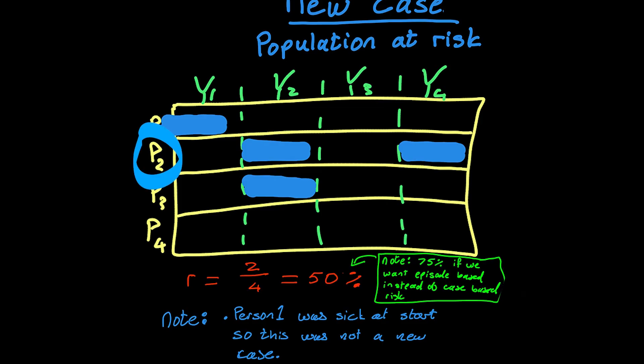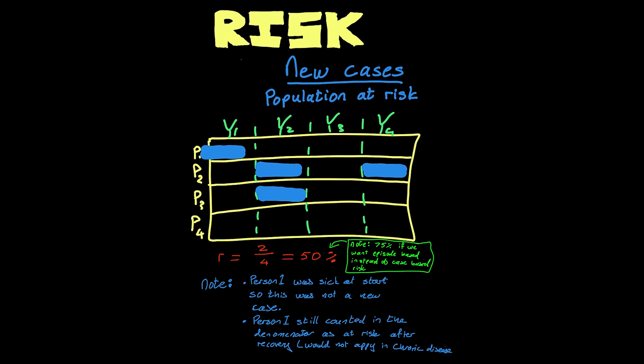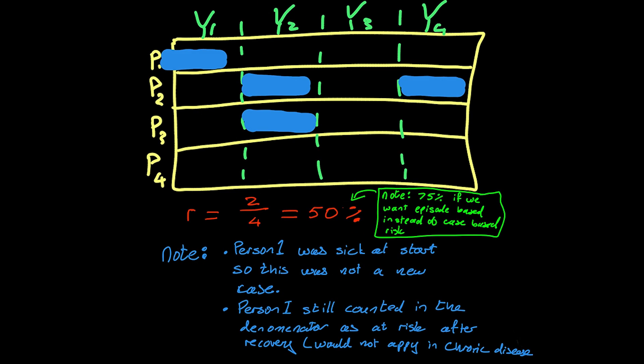The next thing to notice is that person 2 got sick twice, and how do we deal with that? That depends a little bit on whether you're wanting to calculate what we call person-based risk or incidence-based risk, and usually we're talking about person-based risk. Unless otherwise specified, we're talking about the probability of a person getting sick in a particular time frame. How would we interpret this diagram as it is at the moment? Well, of the four people that were at risk, two of them got sick. So the typical interpretation of this diagram with respect to risk is that two of the four people got sick, and the risk was 50%. In other words, of those four people, there was a 50% chance for each of them that they would get sick in the four years that we were considering. If we were talking about incident-based risk, we would say 75%, because we would count the two occurrences of the disease in person 2.